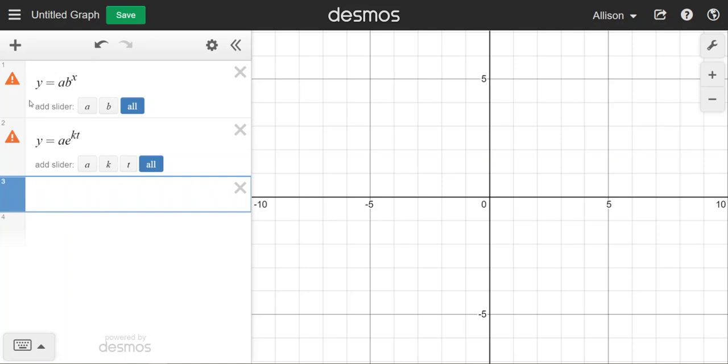In this example, we're going to look at an exponential equation in the form a times b to the x and an exponential equation in the form a times e to the kt. The top model, the a b to the x, is sometimes called the annual growth model or yearly growth, monthly growth, depending on what time unit you have on your independent variable.